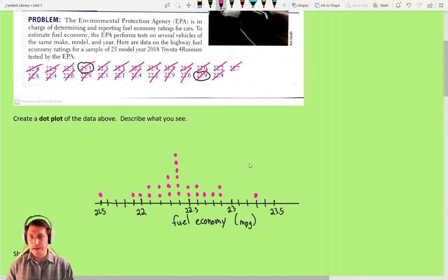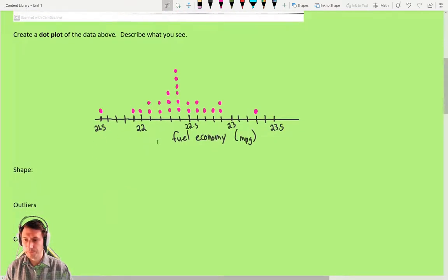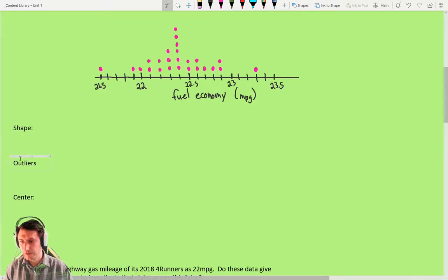So now we need to describe what we see. So what are the things that we want to describe? Well, there's a couple: the shape, outliers, the center, and variability. We'll go over these in more detail in a second. But I'm just going to fill them out for this.